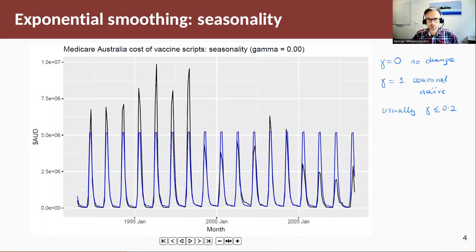A bit of an animation, let's have a look at an example. This is Medicare Australia cost of vaccine scripts data with quite high seasonality. So the blue line here is a seasonal component. The black line is the actual data. So just a bit of notation here. When gamma is equal to 0, we have no change. And hence gamma here, we start the animation with gamma is equal to 0. So no change in the smoothing, in the seasonal component.